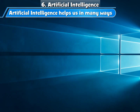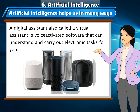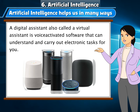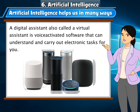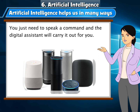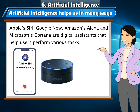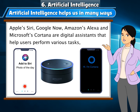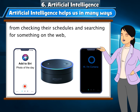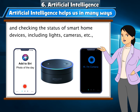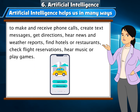Artificial Intelligence helps us in many ways. Digital Assistance: A digital assistant, also called a virtual assistant, is voice-activated software that can understand and carry out electronic tasks for you. You just need to speak a command and the digital assistant will carry it out. Apple's Siri, Google Now, Amazon's Alexa, and Microsoft's Cortana are digital assistants that help users perform various tasks, from checking schedules and searching the web to controlling smart home devices including lights and cameras.